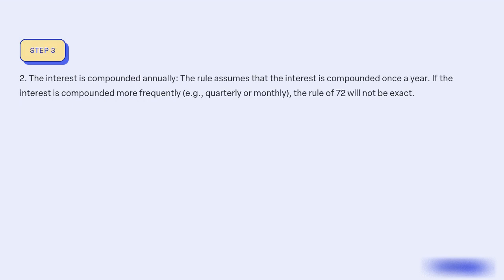Condition 2: The interest is compounded annually. The rule assumes that the interest is compounded once a year. If the interest is compounded more frequently, e.g., quarterly or monthly, the rule of 72 will not be exact.